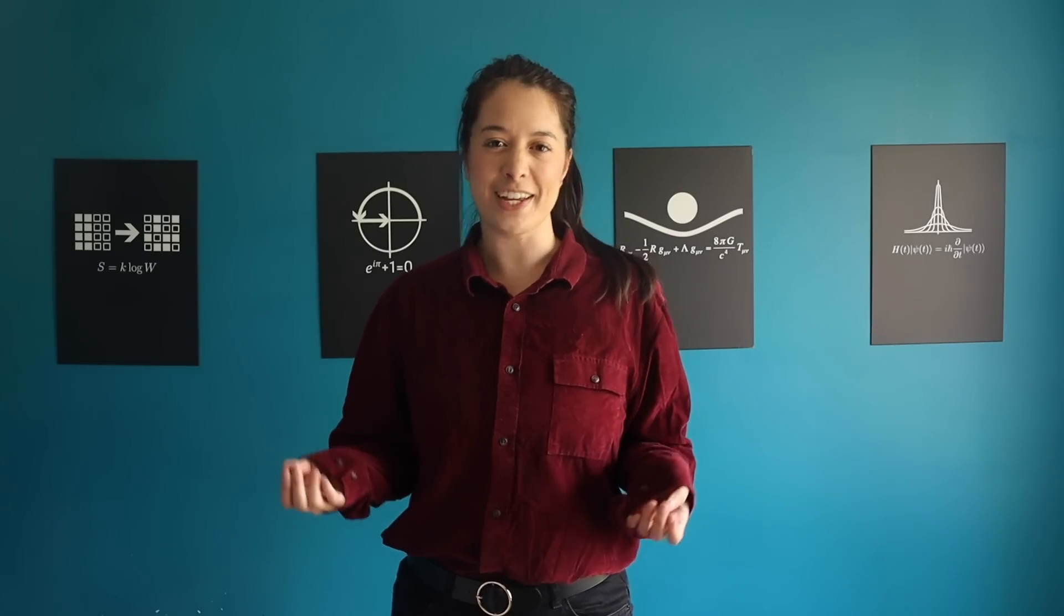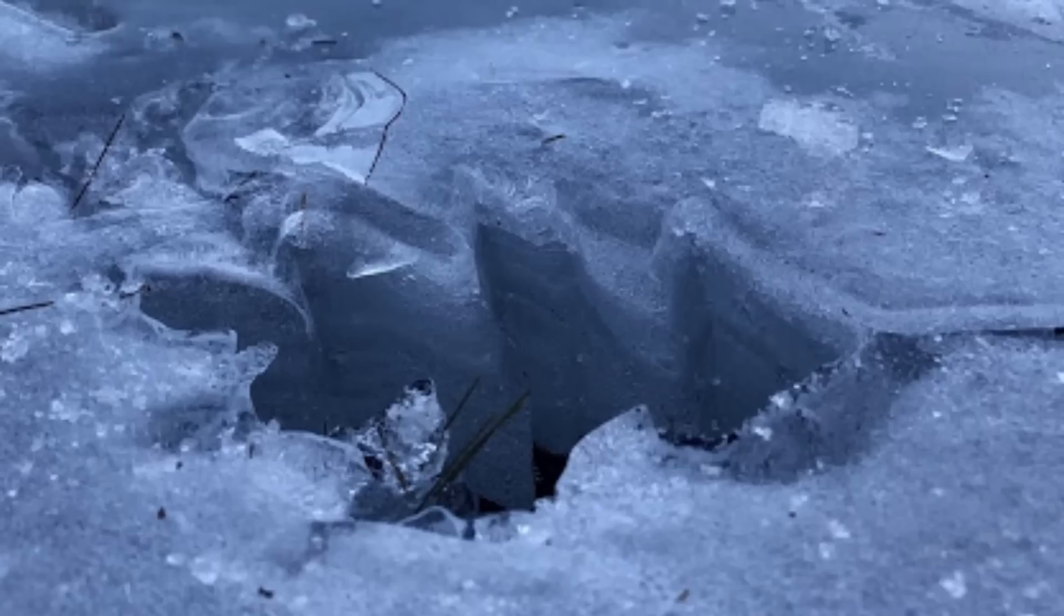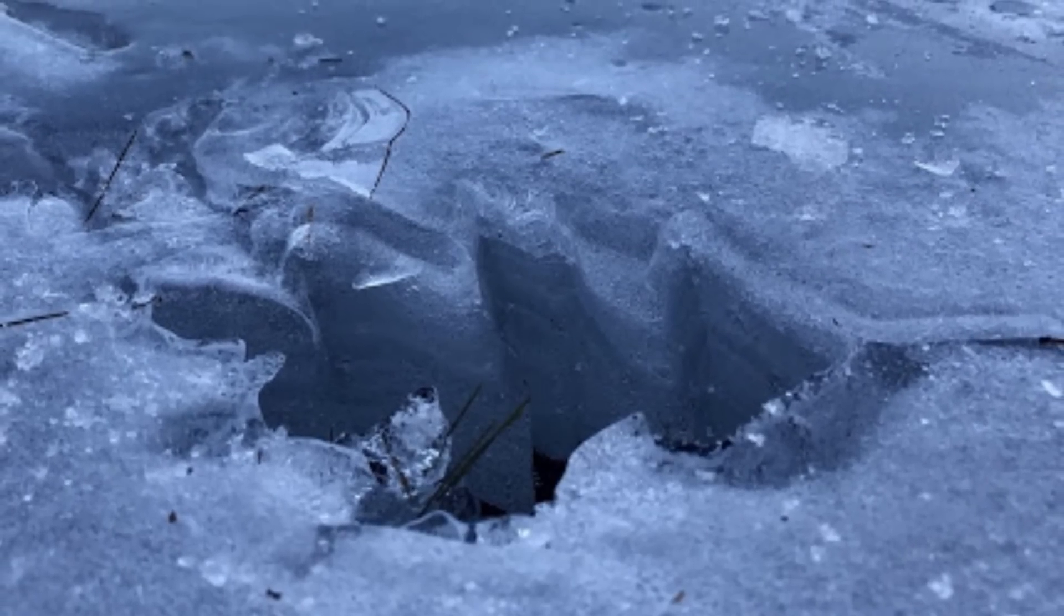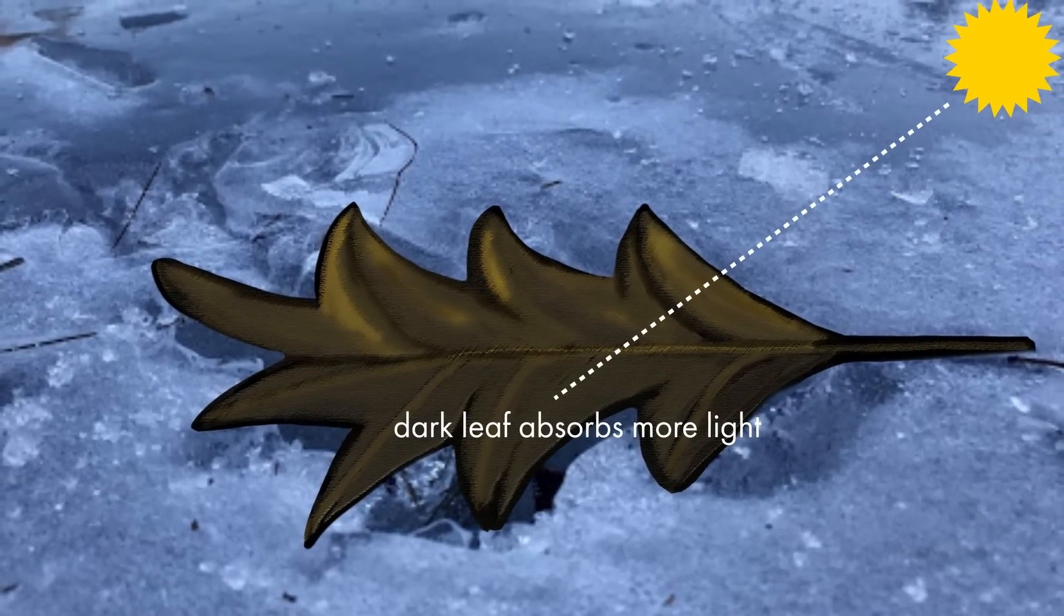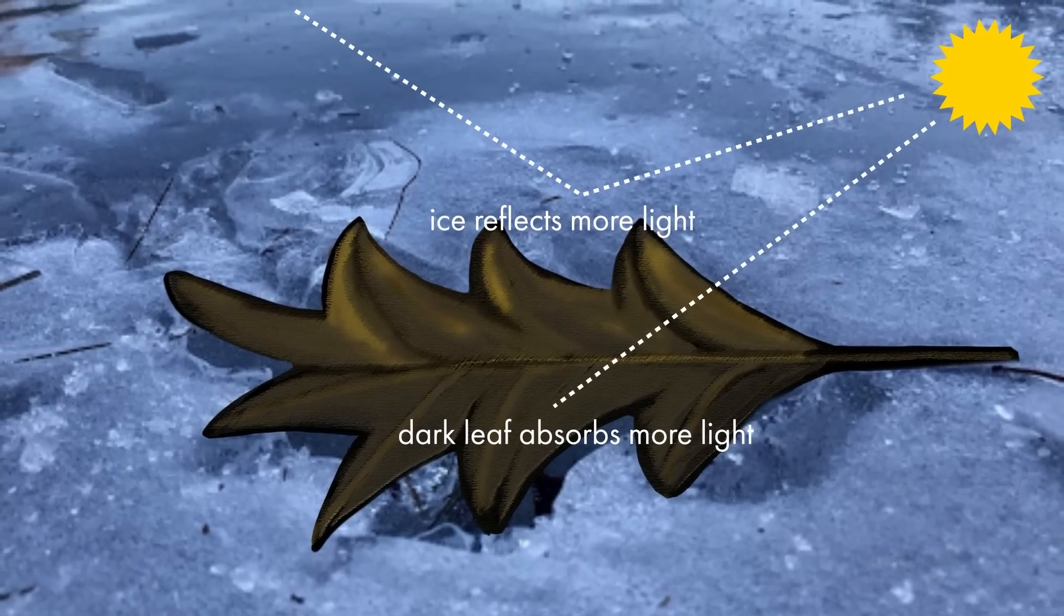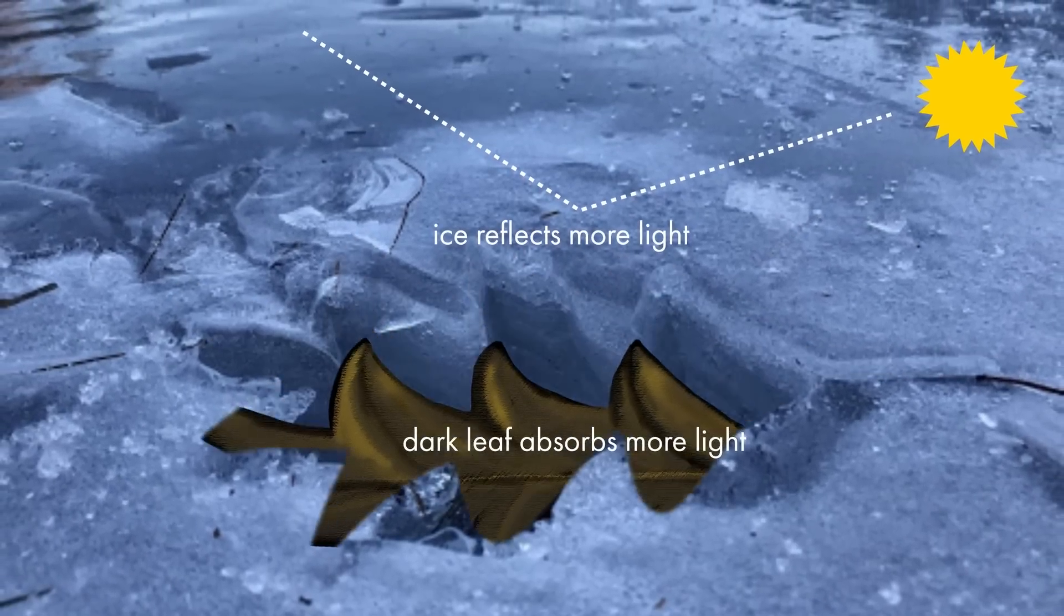You probably know from experience that some surfaces absorb or reflect more sunlight than others. We can see this effect in a cool way in this picture I found on Reddit. A perfect leaf shape melted in the snow. How did this happen? The dark leaf absorbed more heat from the sun than the ice around it, heated it up, and melted the ice below it.